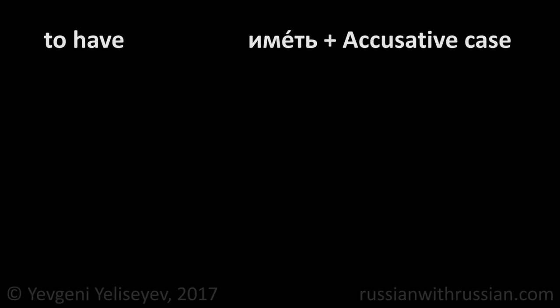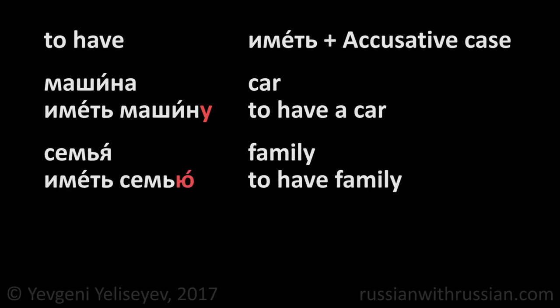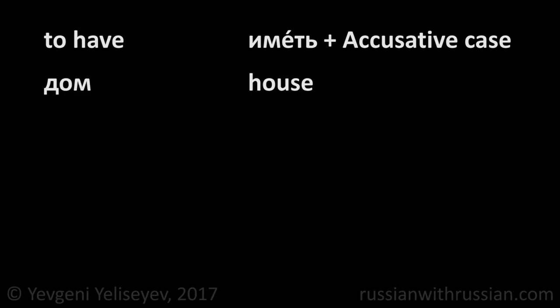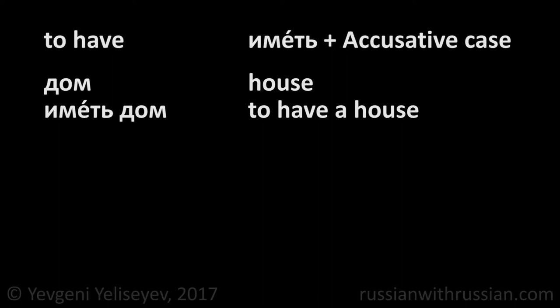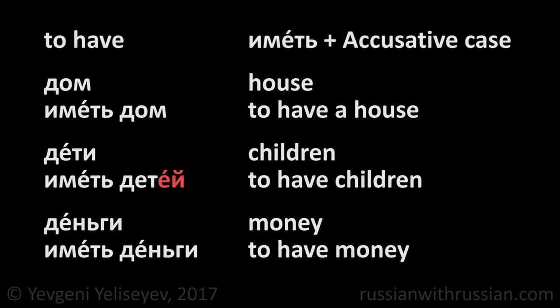To have in Russian is иметь. This verb is used with the accusative case. As I said in my previous lessons, in Russian language there are no articles. Examples: машина — car — иметь машину, to have a car; семья — family — иметь семью, to have a family; дом — house — иметь дом, to have a house; дети — children — иметь детей, to have children; деньги — money — иметь деньги, to have money.